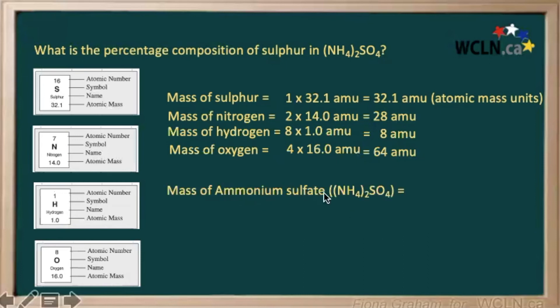We will add all of those up to calculate the total mass of our compound. So our 28 plus 8 plus 32.1 plus 64, giving us a total atomic mass of 132.1 for our whole ammonium sulfate. Now remember, we want to know the percentage of sulfur in our compound.